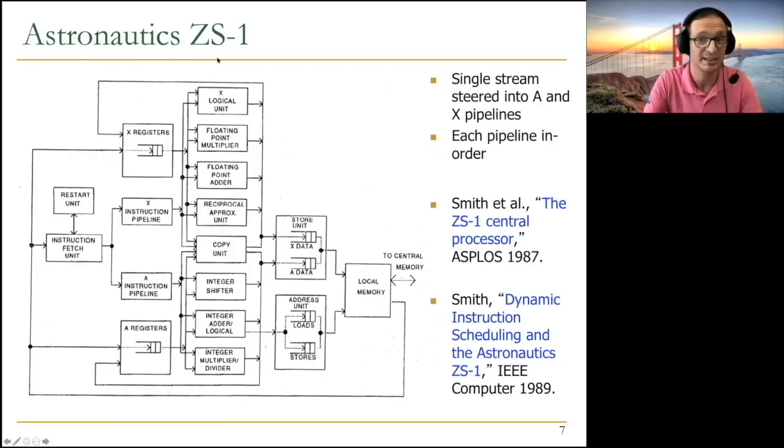This is the Astronautics CS1 processor. They have a single instruction stream, instruction fetch unit, and they separate it dynamically into an access processor, access instruction pipeline, and an execute processor, execute instruction pipeline. Each pipeline is in order. This is very important. Each pipeline is simple in order. There is no out-of-order execution inside the pipeline. The out-of-order execution capability comes from one instruction pipeline being asynchronous with the other instruction pipeline until it needs data from that pipeline.